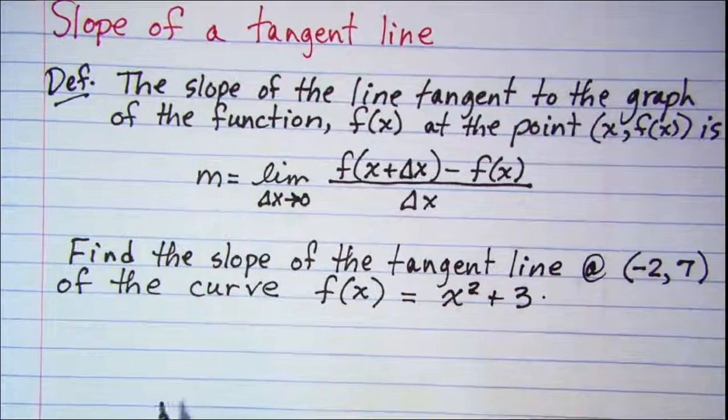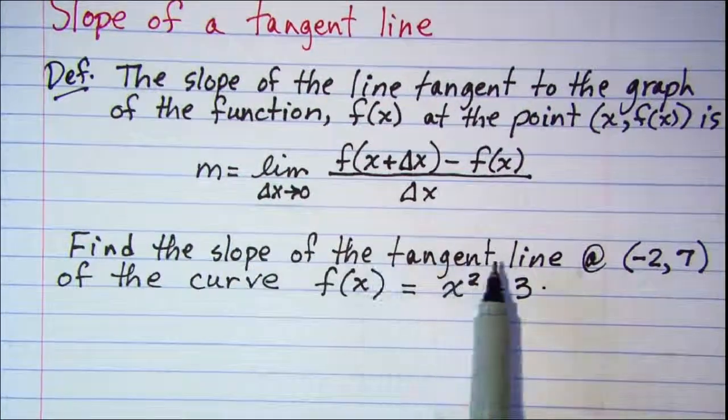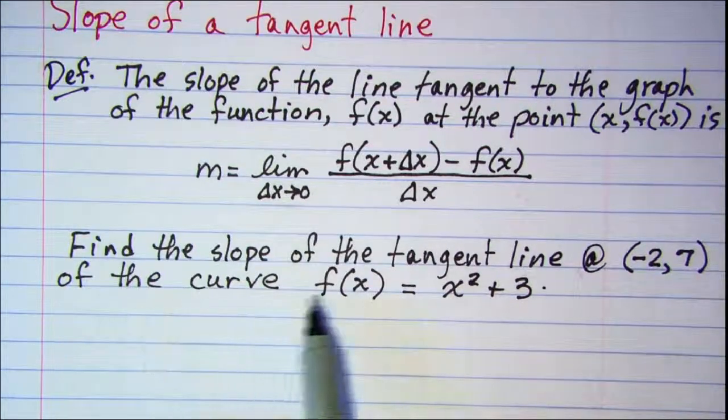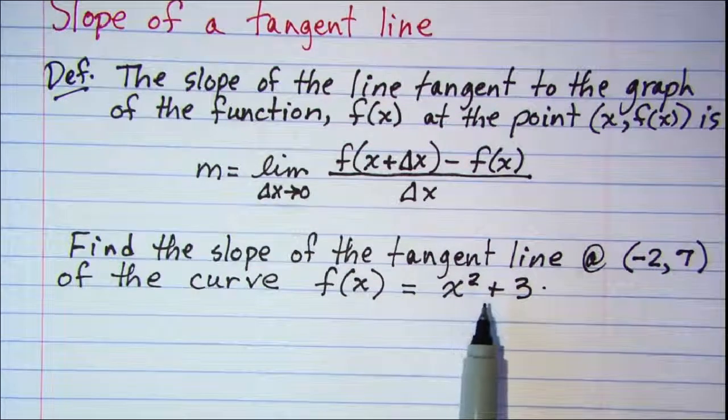Our problem that we'll be working with is to find the slope of the tangent line at the point (-2, 7) of the curve f(x) equals x² + 3.